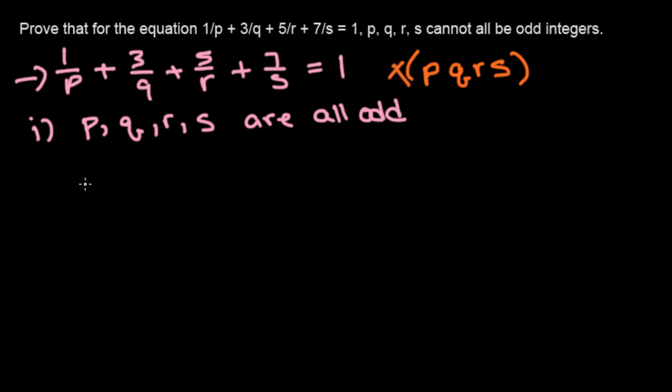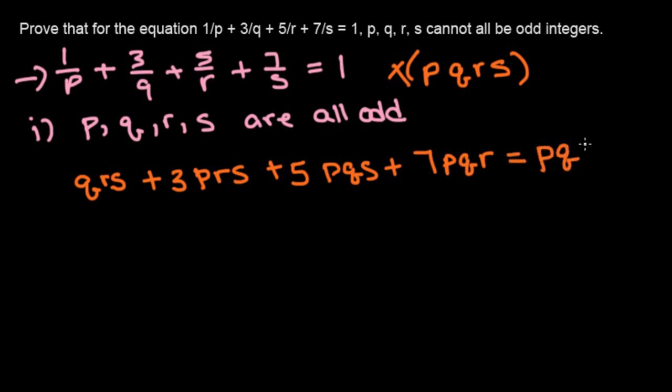We get qrs plus 3prs plus 5pqs plus 7pqr equals pqrs.